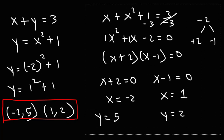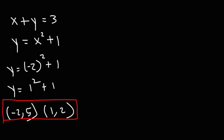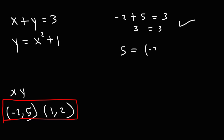Sometimes you can get multiple answers, but not all possible solutions may be correct. You need to check them, which is what we're going to do. Let's check the first solution by replacing x with negative 2 and y with 5. Negative 2 plus 5 is equal to 3, so it satisfies the first equation. For the second equation, negative 2 squared plus 1 is 5, so the first solution satisfies both equations.